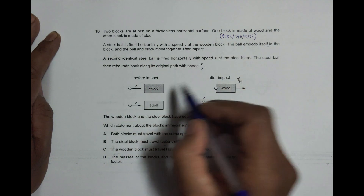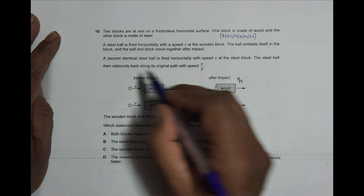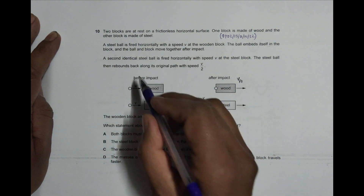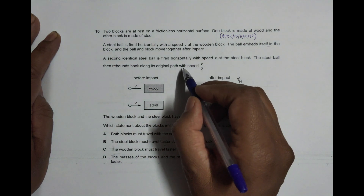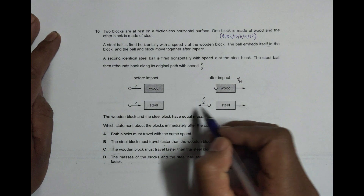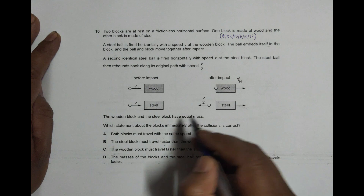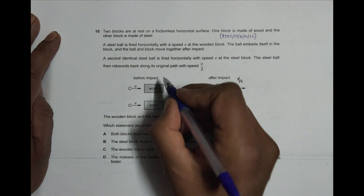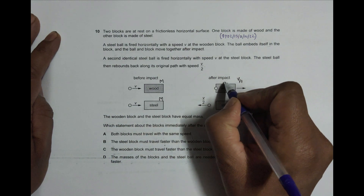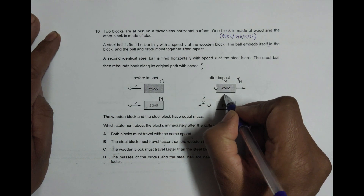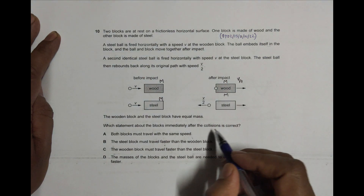The steel ball then rebounds, reflected back along its original path with speed V/2. The wooden block and the steel block have equal masses, which we name as large M. The steel ball has mass small m.